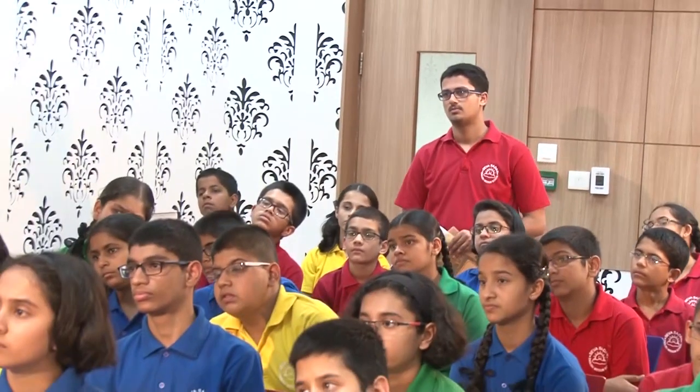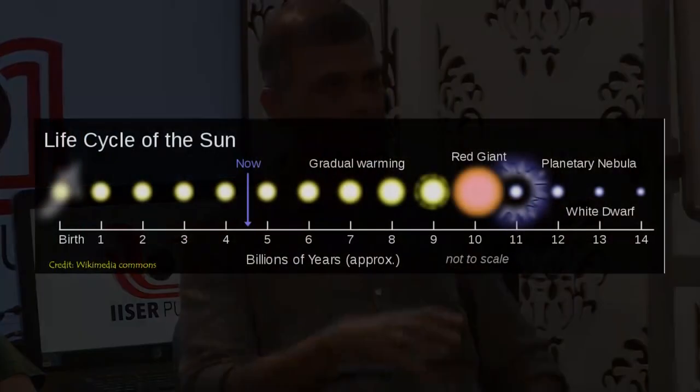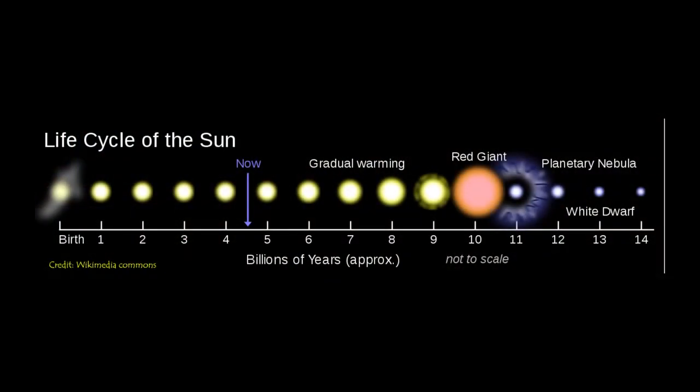Coincidentally, that is the next phase of life for our Sun — in about five billion years from now it will become a red giant. And what will be the last stage for us? It will be a white dwarf.